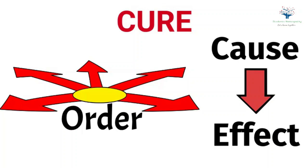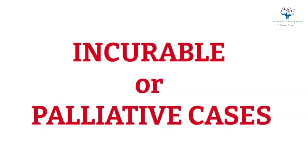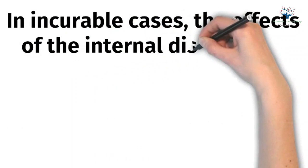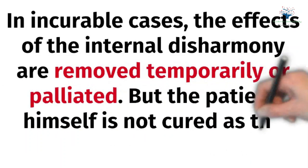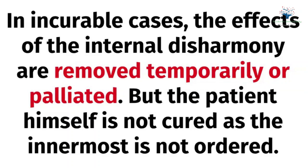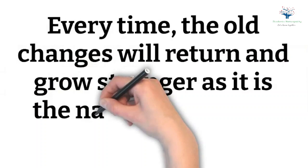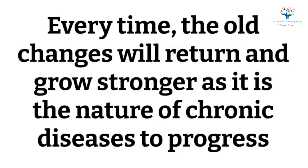Kent then discusses incurable or palliative cases. In incurable cases — that is, palliative ones — the effects of the internal disharmony are removed temporarily or palliated, but the patient himself is not cured as the innermost is not ordered. Every time the old changes will return and grow stronger, as it is the nature of chronic diseases to progress.